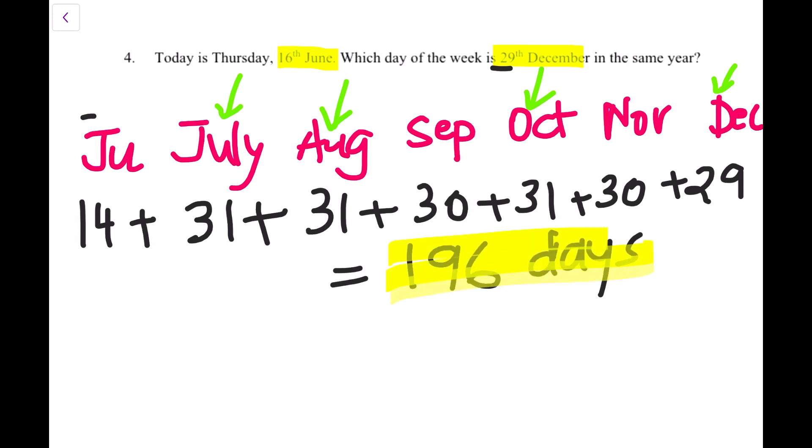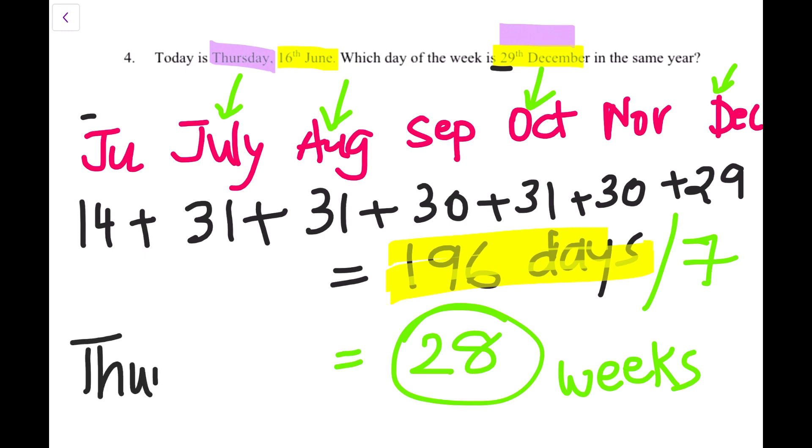Now, in order to find the day, we need to divide this by 7 to calculate how many weeks has it been. And when you divide it, you can use a bus stop method, a written method, to find out this is 28, no remainder, exactly 28. That means between 16th of June and 29th December, there have been exactly 28 weeks. If there have been exactly 28 weeks, that means we started on a Thursday. And that means on 29th December, we will also end on a Thursday. So the answer to this question is a Thursday.